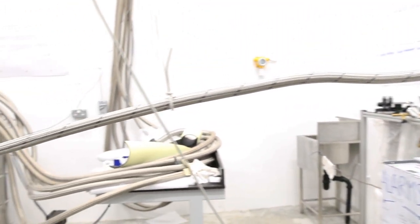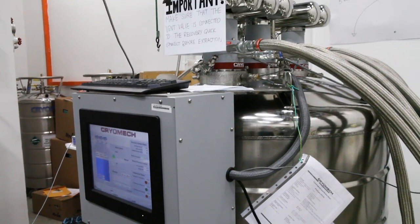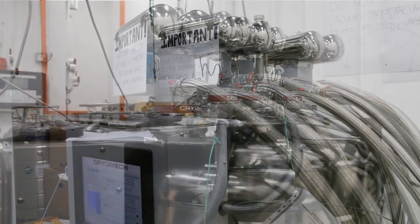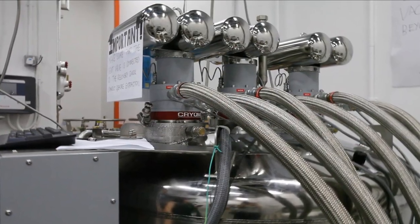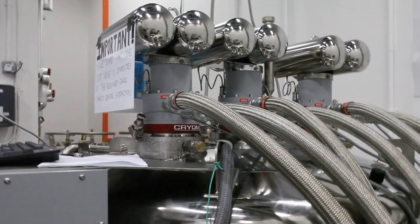The reliquifier cools and liquefies the room temperature gas using three two-stage pulse tube cryocoolers. These cryocoolers operate by repeated adiabatic expansion and compression of gas in a tube with heat exchangers at each end, the pulse tube.